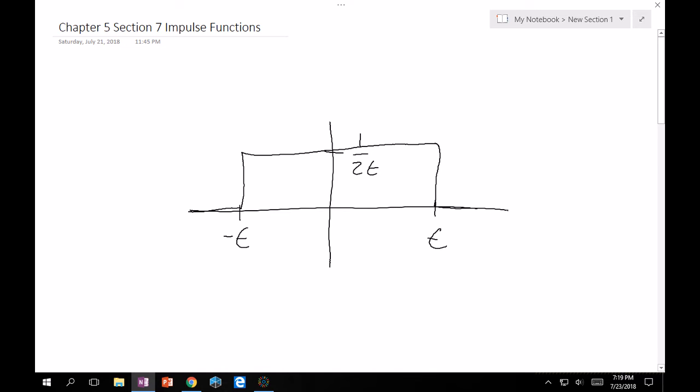Hopefully you can see that the area of this rectangle is equal to 1. Its length is 2 epsilon and its width is 1 over 2 epsilon. So if you multiply those two together you're going to get 1.